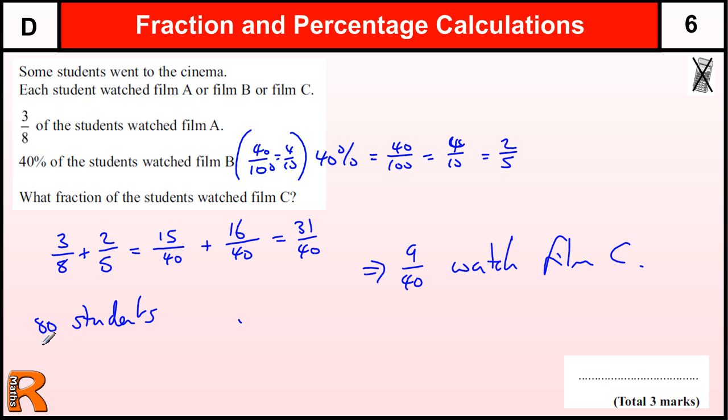Now, one-eighth of 80 equals ten students, so three-eighths would be 30 students. And four-tenths, or 40%, or ten percent would be eight students, so four lots of that would be 32 students.